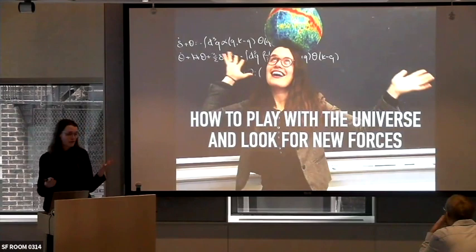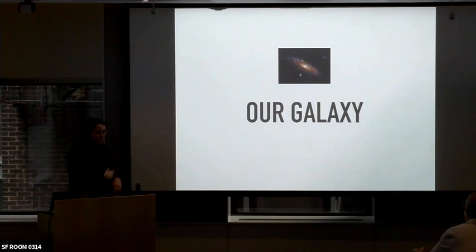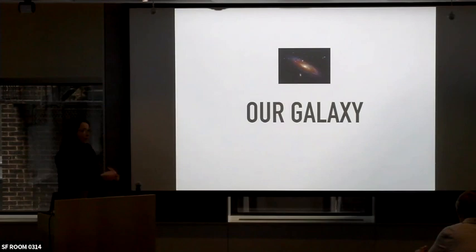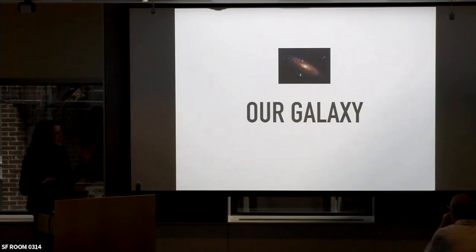Let me start fairly locally by talking about things happening in our galaxy. This image is actually Andromeda — I'm using it as a visual proxy for the Milky Way, since we can't take a picture like this of our own galaxy because we're embedded inside it. If we look at galaxies like our galaxy, like Andromeda or the Milky Way, we see evidence for dark matter.